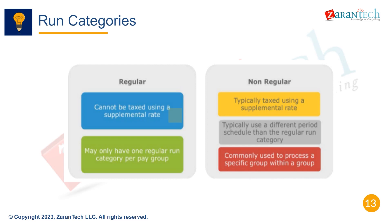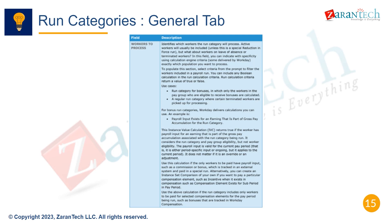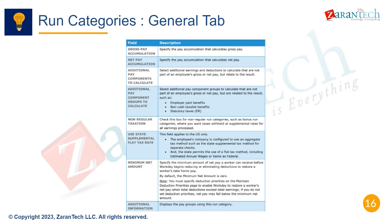Run Categories determine what type of pay to include in a pay run, like regular pay or off-cycle pay. The General tab of Run Categories captures the name, description, and whether it's for on-cycle or off-cycle processing, along with pay calendars and payment election rules.